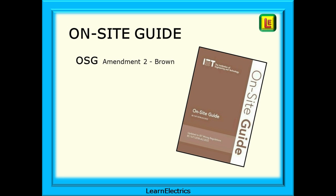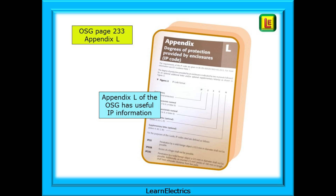The on-site guide, or OSG, contains some brief but very useful references to IP codes. Do not overlook the information that is in the on-site guide, the Brown Amendment 2 edition. Appendix L on page 233 of the on-site guide is where we need to be, and we should all have a copy of this. There are only two pages to the appendix, but they are so very useful and will help enormously in your understanding.